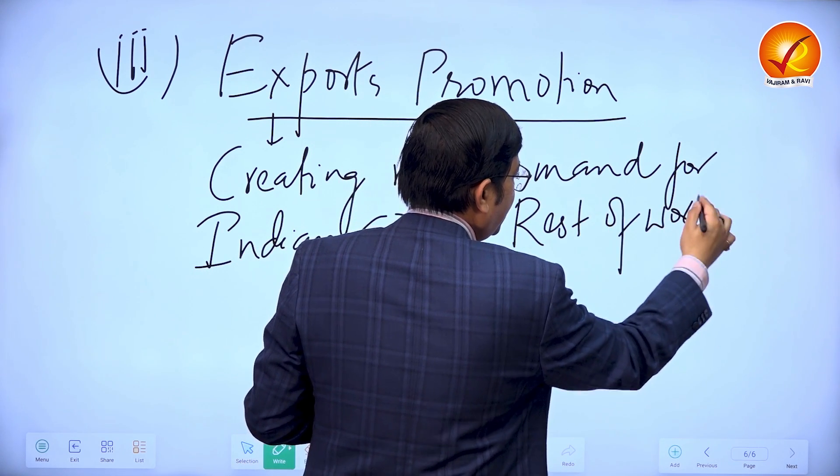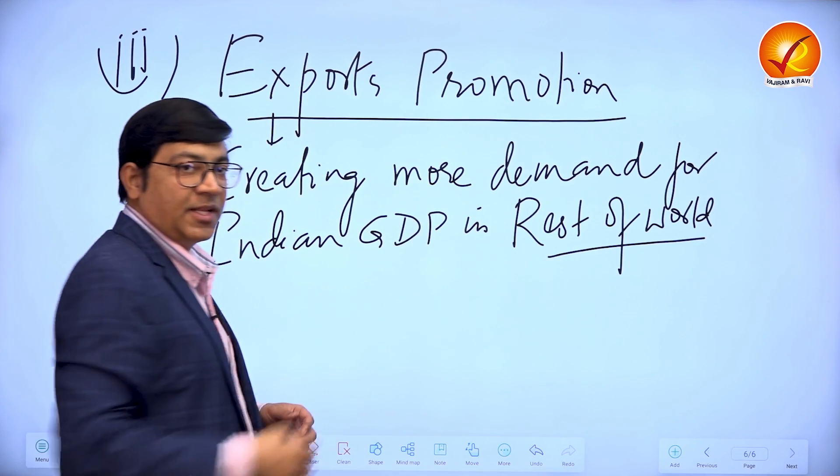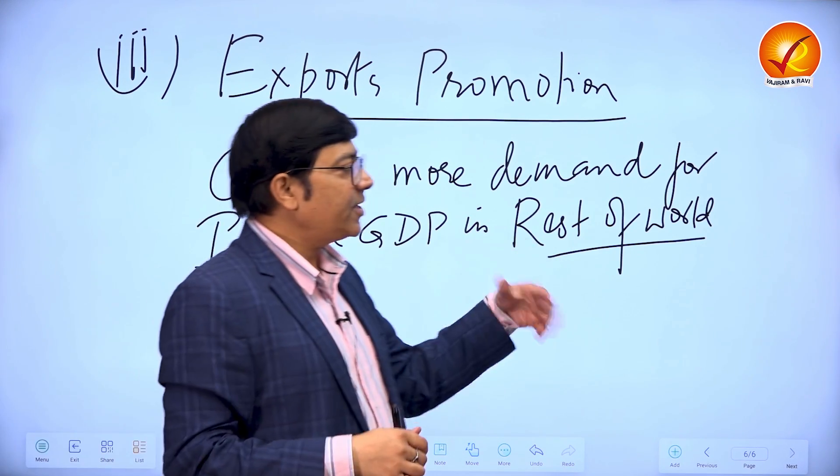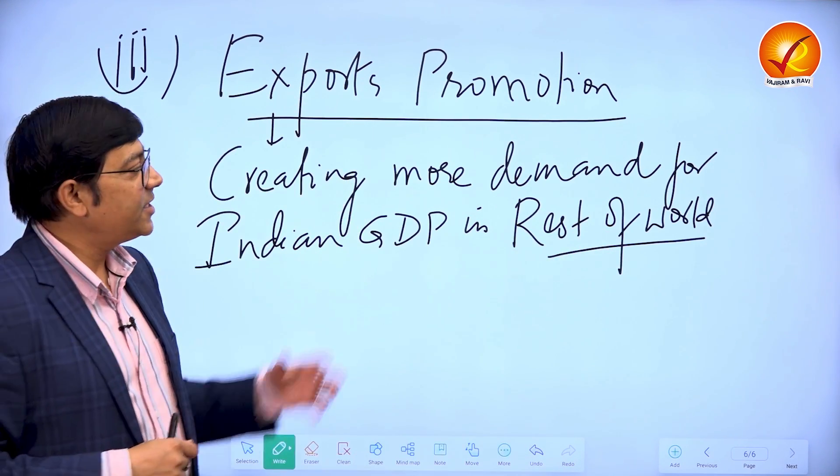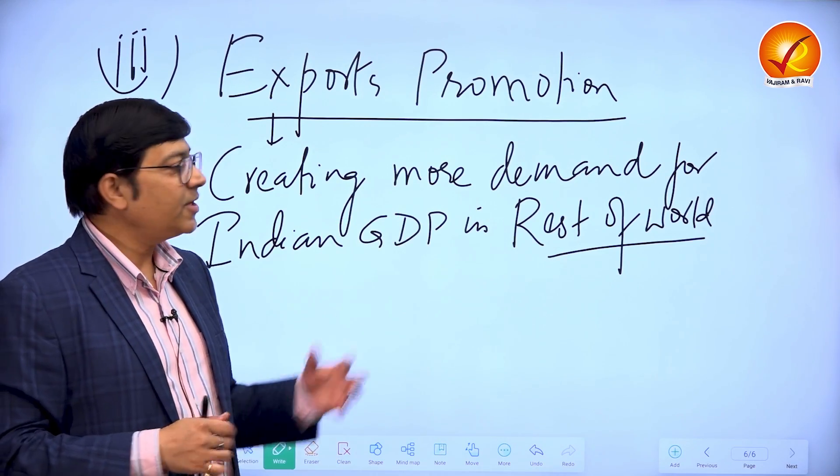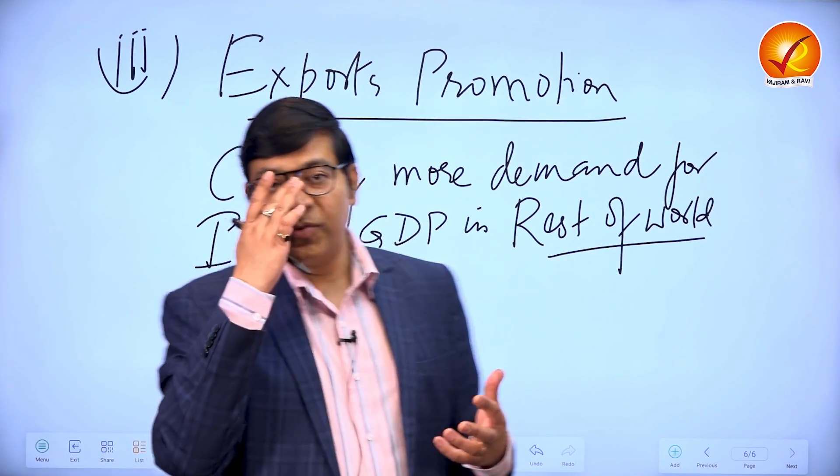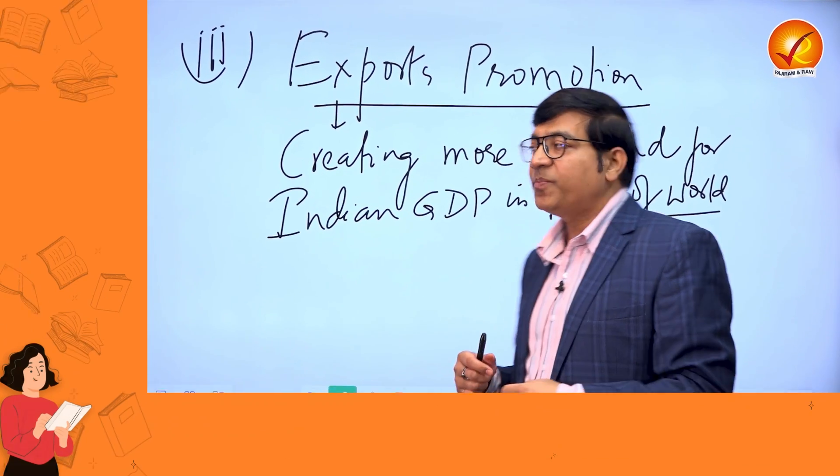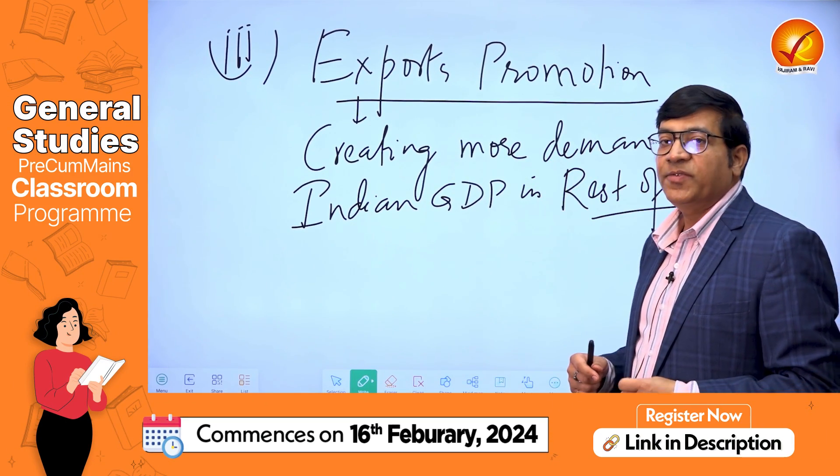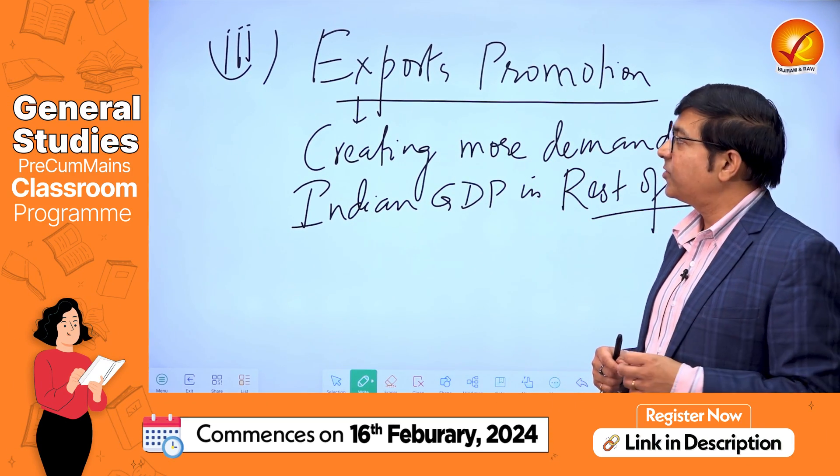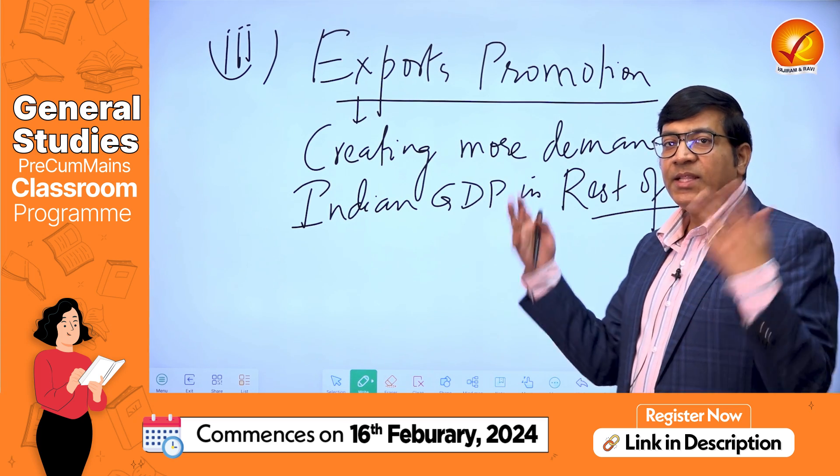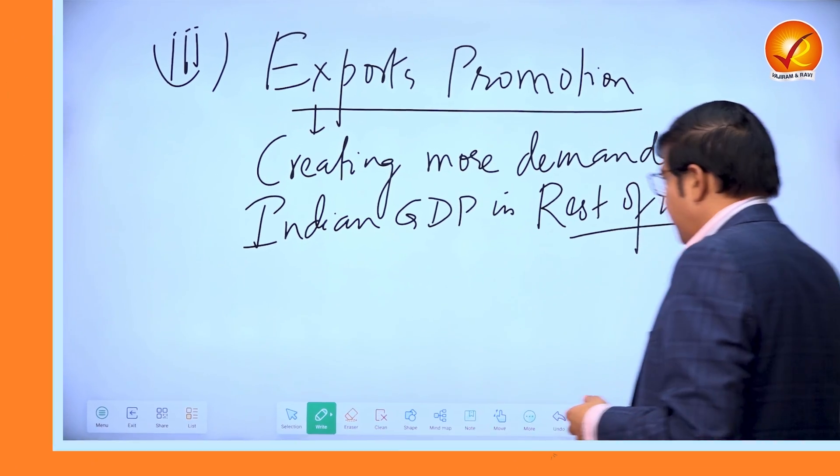So one way that GDP can be increased to its potential level is when the demand for the GDP of India is taken to the rest of the world also. Through competitive exports, through good technology, through cheaper exports. That is one of the reasons why government often talks about export promotion a lot. And then there are other arguments also that can be given.